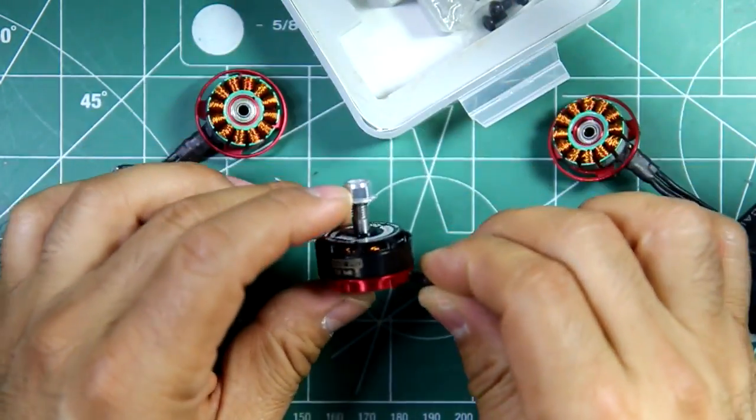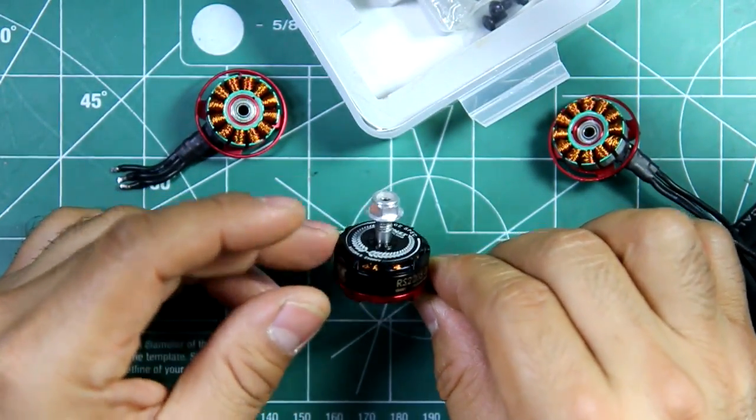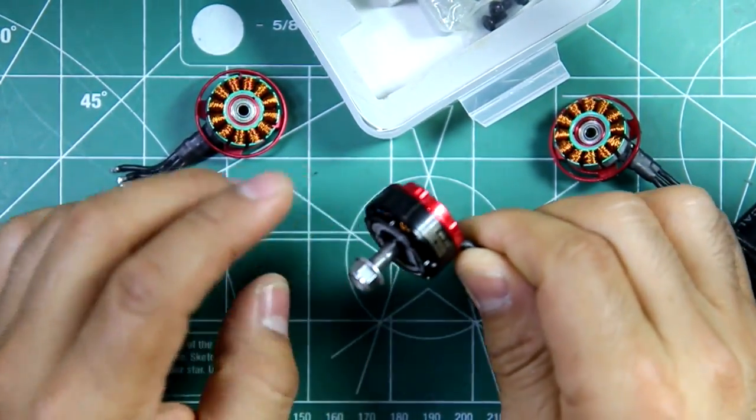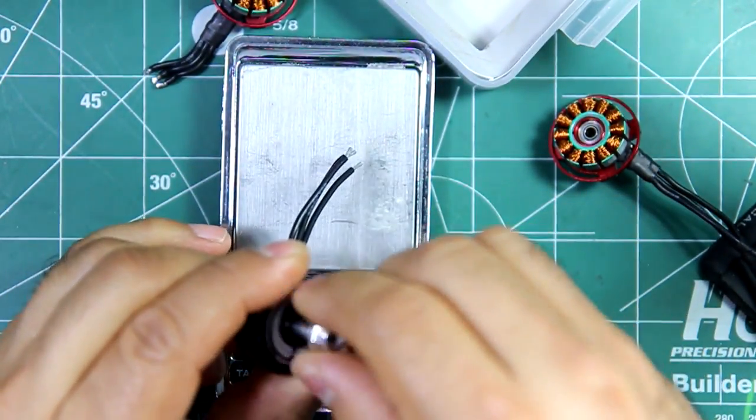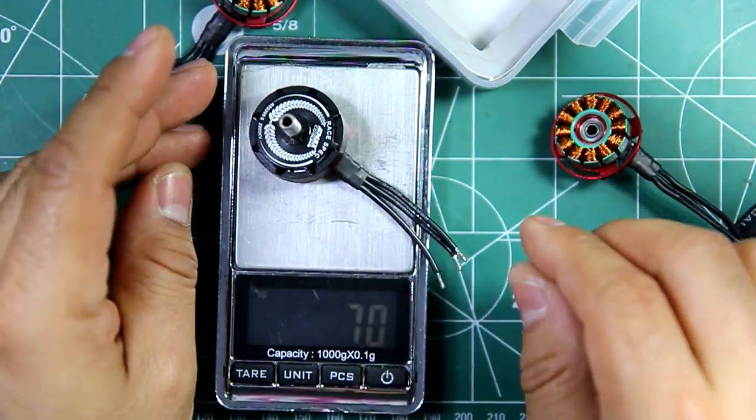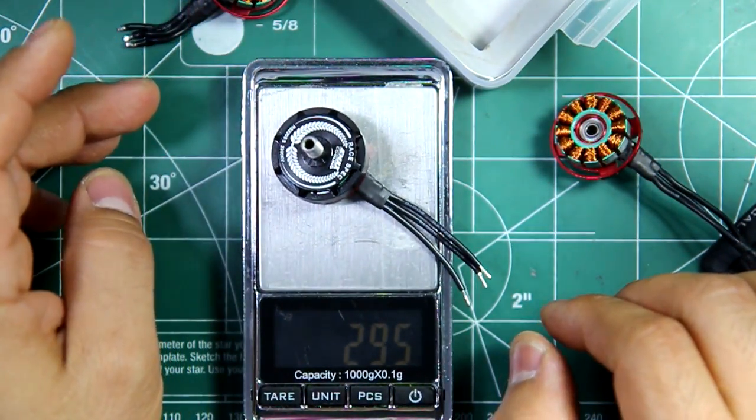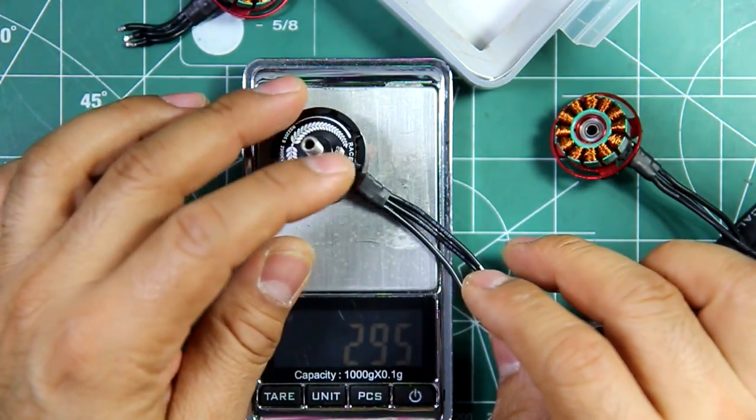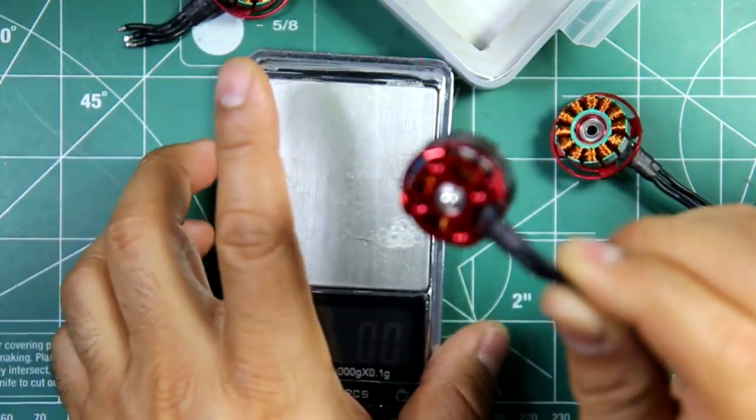So this one is quite a powerful motor and it's fairly light too. I think the weight went up just a little bit, not a lot. So it's 29.5 grams, half a gram or so it went up, but it's still pretty light.